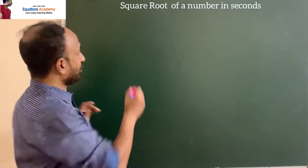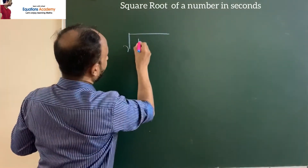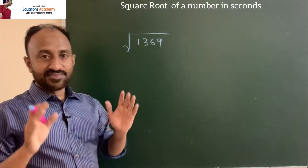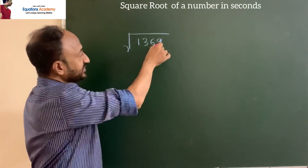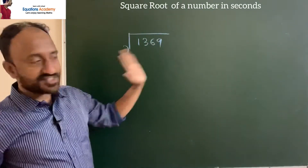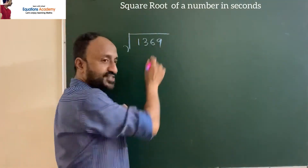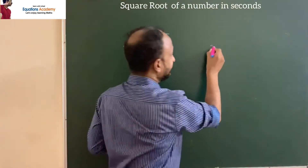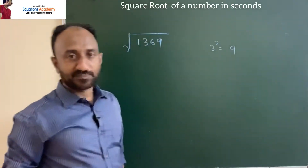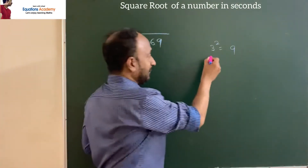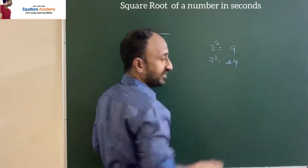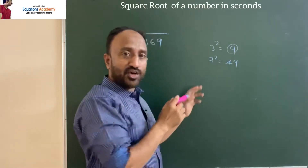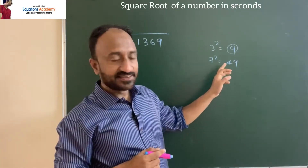Let's take an example: square root of 1369. The first step is to take the digit at the unit's place, that is 9. We know that 3 squared is 9, and 7 squared is 49 — there also the unit's place is 9. So if we take square of 3 we get 9, and if we take square of 7 we get the unit's place as 9.